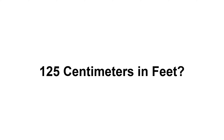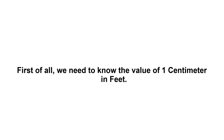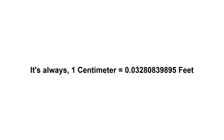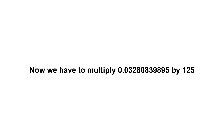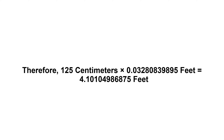125 centimeters in feet. First of all, we need to know the value of one centimeter in feet. One centimeter equals 0.03280839895 feet. Now we have to multiply 0.03280839895 by 125. Therefore, 125 centimeters times 0.03280839895 feet equals...